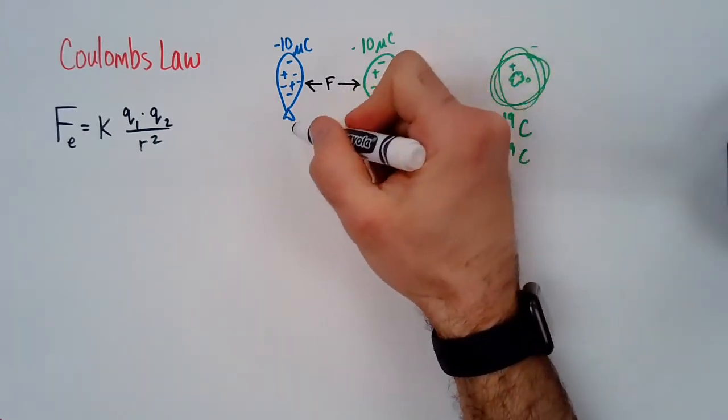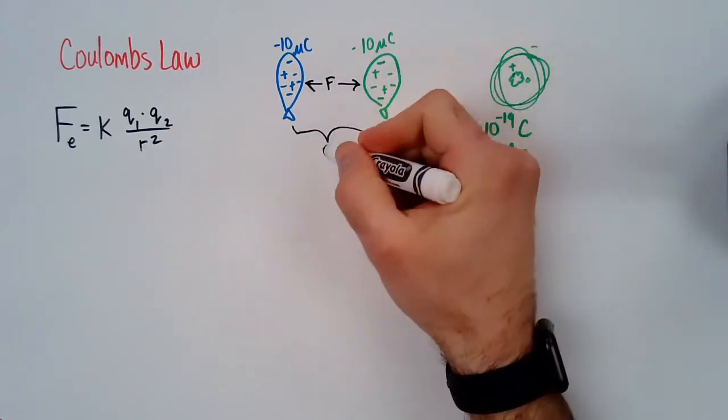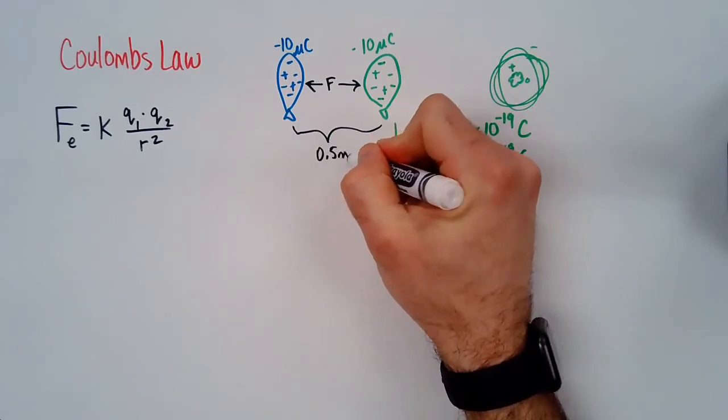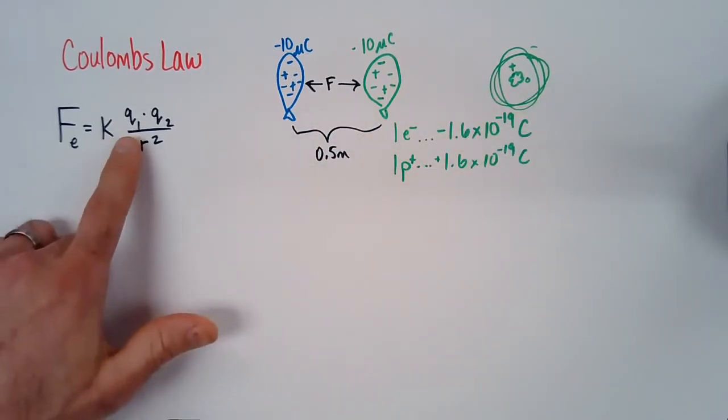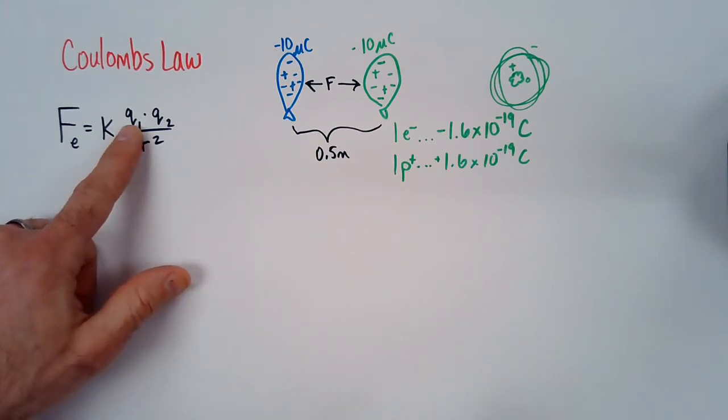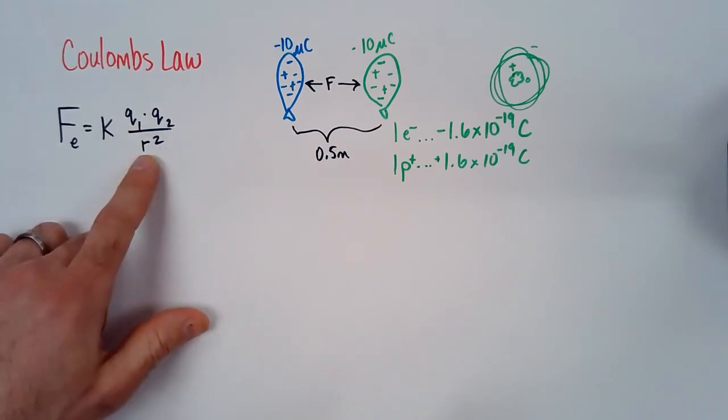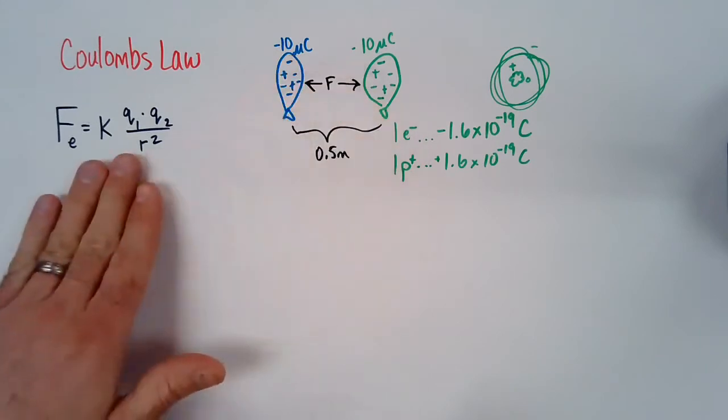So the last thing to add to my example, let's say these balloons are half a meter apart, okay? Now, in this equation, the Q values are the charges in Coulombs. R is distance in meters, so we're all prepped to go.